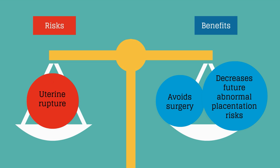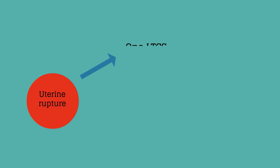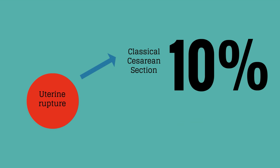Uterine rupture is the most feared complication of a trial of labor after cesarean. With a history of one low transverse cesarean section, the risk of uterine rupture is 0.7 to 0.9 percent. With a history of two low transverse cesarean sections, the risk of rupture is 0.9 to 1.8 percent. With a history of a classical cesarean section, the risk of uterine rupture is 10 percent. This high rupture risk is why these women should have a repeat cesarean delivery and not try to labor.